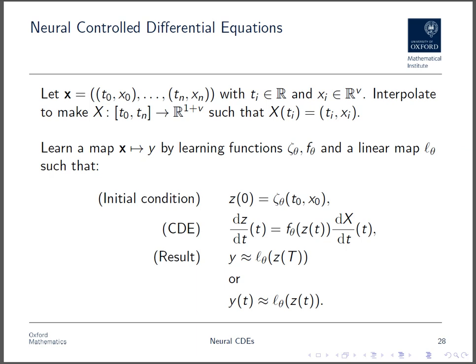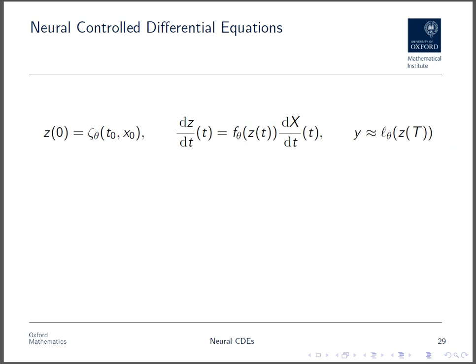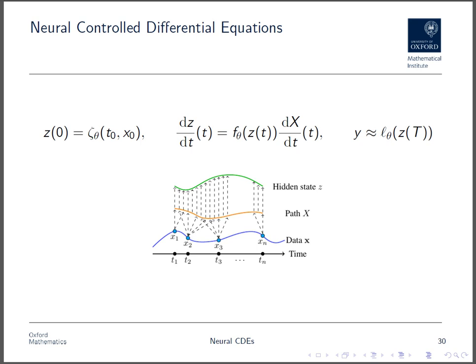So, there are the equations for a neural CDE again. Pictorially, what's going on looks like this. We have some underlying data process, which we observe at points xi, which we then join up to create an interpolation, capital X. This then modifies the hidden state in continuous time.